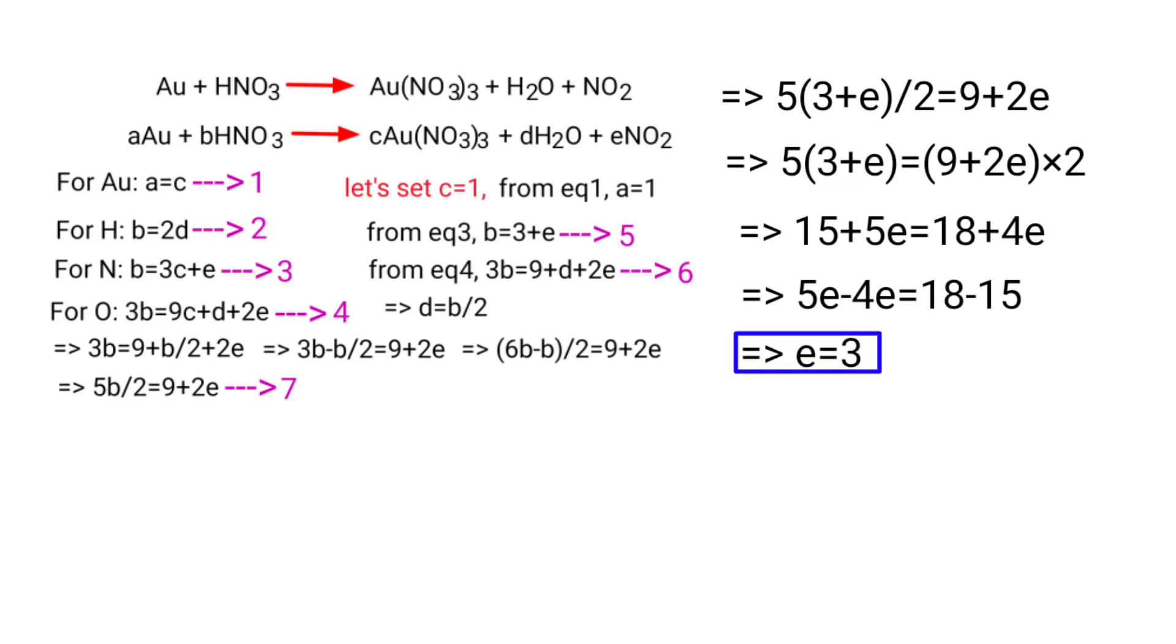Now you can apply the e value in equation 5. So b equals 3 plus 3, that is equal to 6. Now you can apply the b value in equation 2. Then 6 equals 2d, so d equals 6 by 2, that is equal to 3.